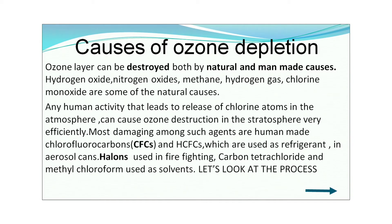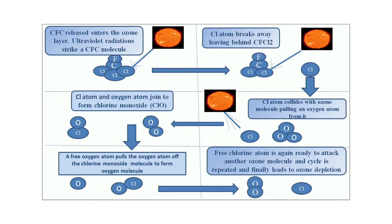Any human activity that leads to release of chlorine atoms into the atmosphere can cause ozone destruction in the stratosphere. The most damaging agents are human-made chlorofluorocarbons (CFCs) and hydrochlorofluorocarbons (HCFCs), used as refrigerants and in aerosol cans, halons used in fire-fighting, and carbon tetrachloride and methyl chloroform used as solvents. UV radiation strikes the CFC molecule in the ozone layer, breaking away free chlorine from the CFC molecule.